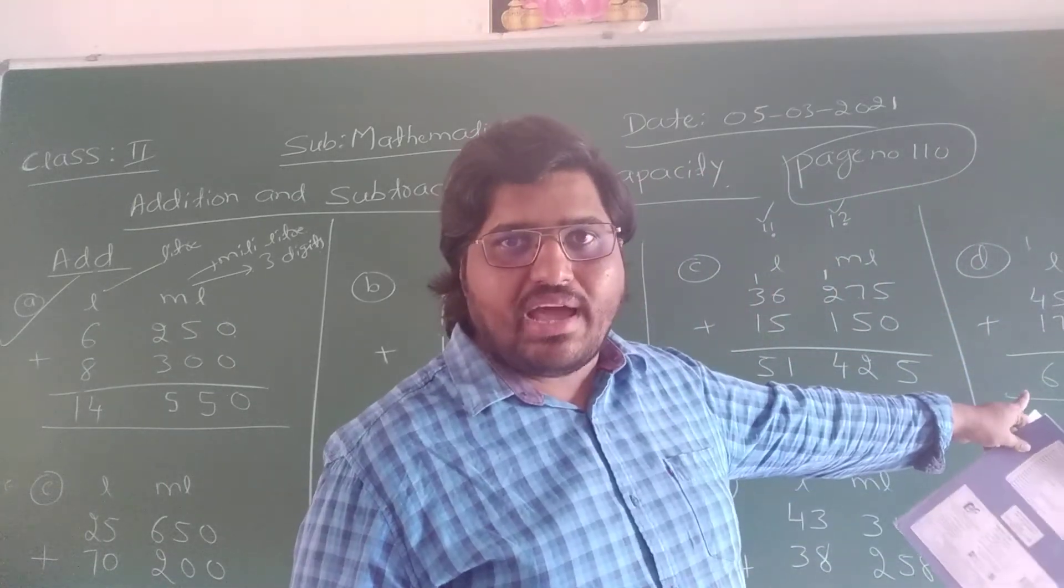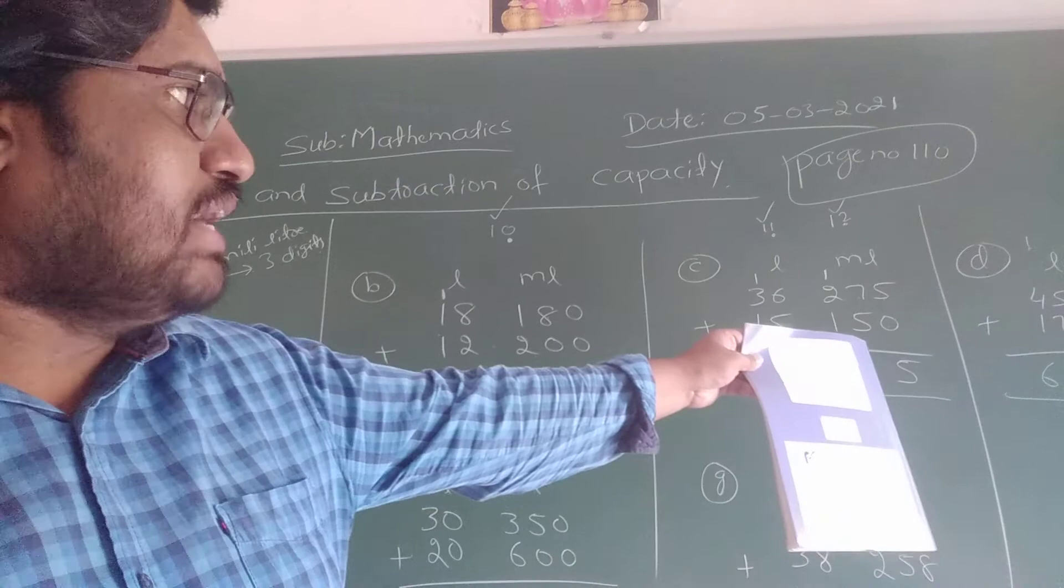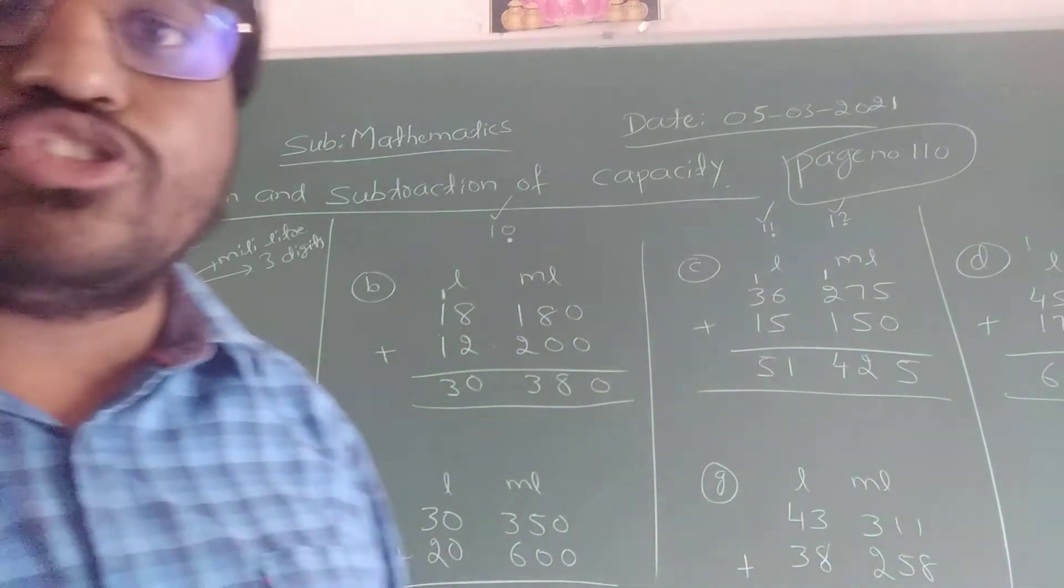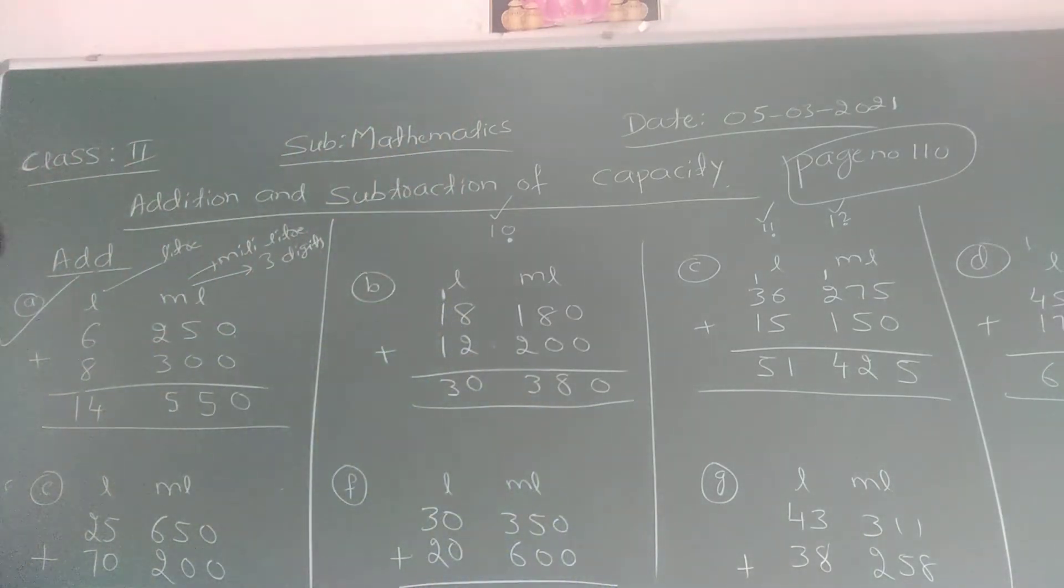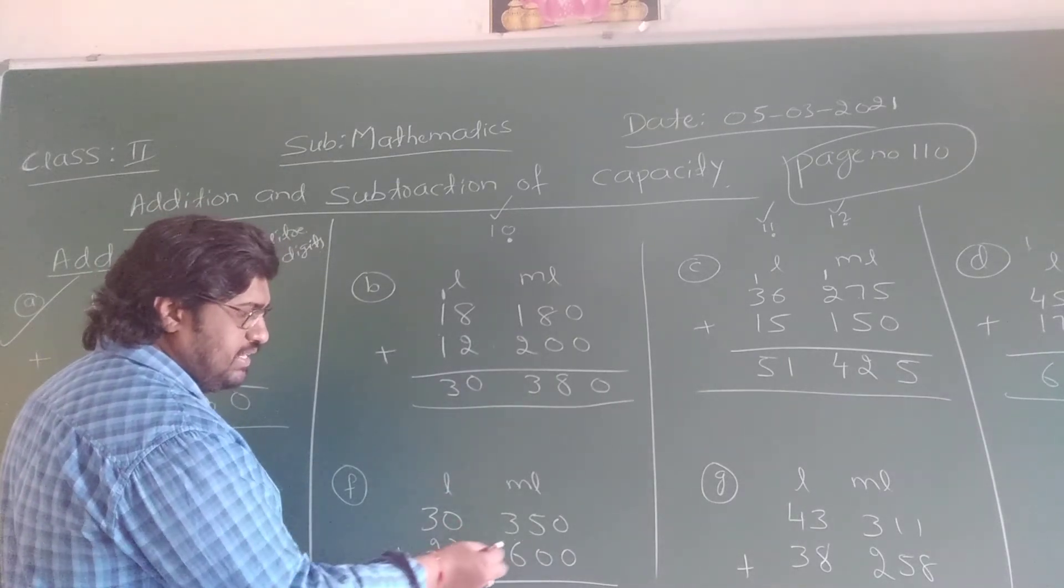Okay now you can see the next example question number E. In your textbook you have to try yourself only that question number D. Okay now move to the next question. The next question is here, here question number E. Add 25 liter and 650 ml plus 70 liter and 200 ml. So 0 plus 0 is 0. 5 plus 0 is 5. 6 plus 2 is 8. 5 plus 0 is 5. 2 plus 7 is 9. So what is the answer we got? We got the answer 95 liter and 850 ml.